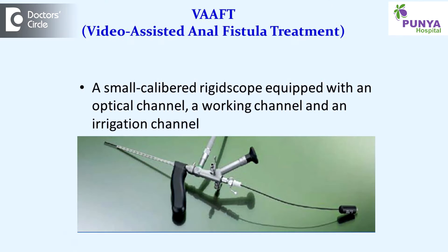For example, a perianal fistula — fistula-in-ano — where the fistula connects from the anal canal to the outside associated skin. We try to do a surgical procedure with the help of a scope that we call the VAFT procedure.